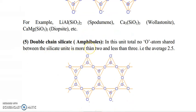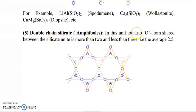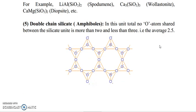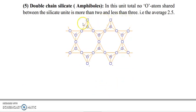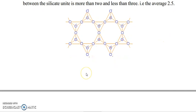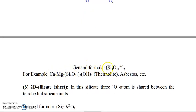Next type is double chain silicate, also known as amphiboles. The total number of oxygen atoms shared between silicate units is more than 2 and less than 3 — that is, an average of 2.5 oxygen atoms are shared between the silicate chains. The general formula for double chain silicate is Si₄O₁₁⁶⁻ N. For example, Ca₂Mg₅Si₄O₁₁(OH)₂ is thermolite (asbestos), and so on.